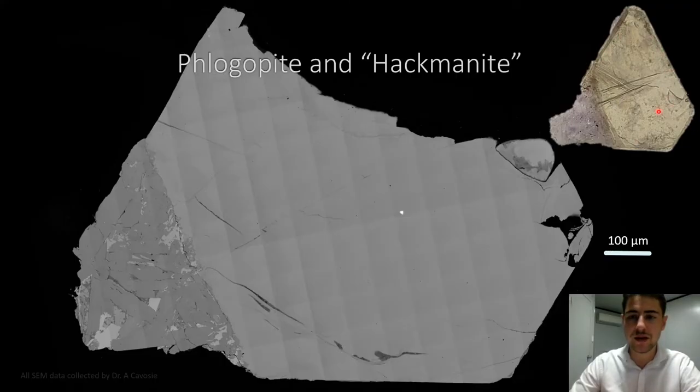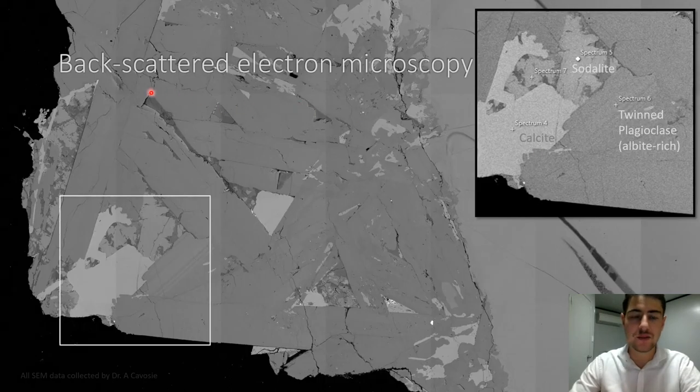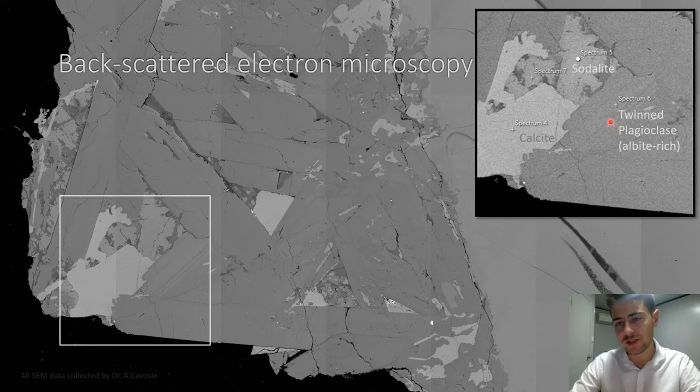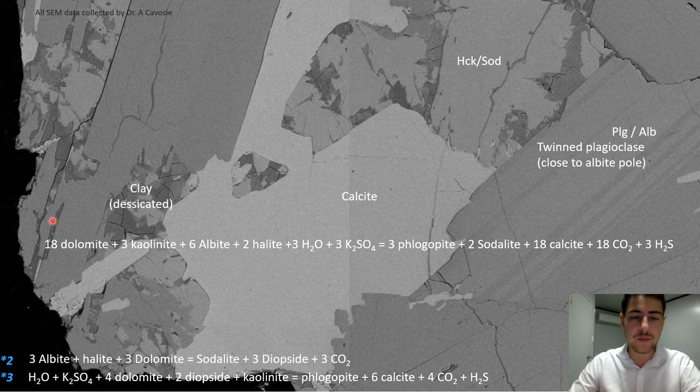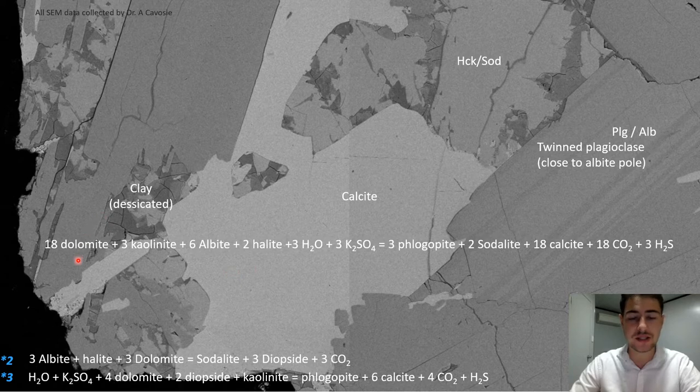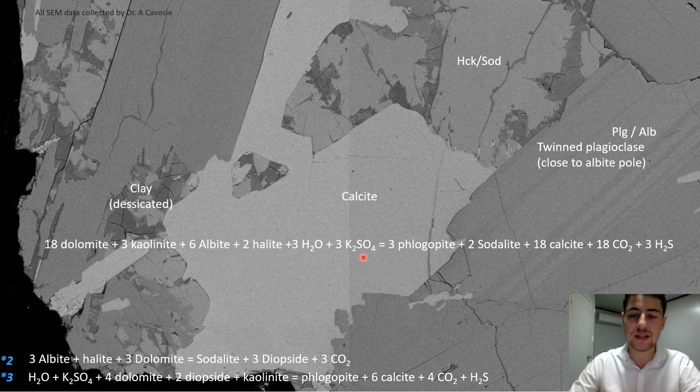The spectra acquired have a very significant result for hackmanite with one-of-a-kind pattern, completely different to that of the scapolite, even though sharing most of the same elements. This hexagonal crystal of phlogopite mica is very clean and homogeneous, to the contrary of the hackmanite, which actually happens to be a mix of different phases that backscattered electron microscopy can identify as being calcite, twin plagioclase, and only a speck of sodalite.